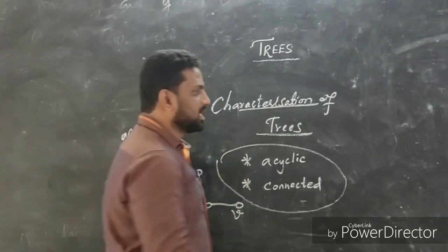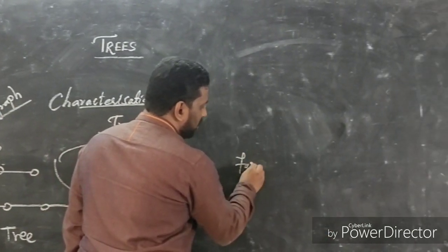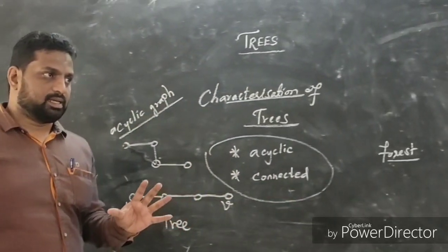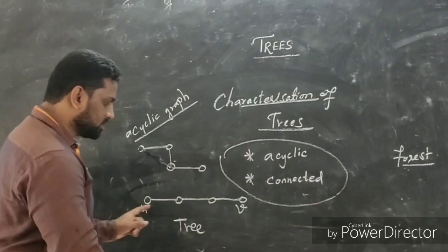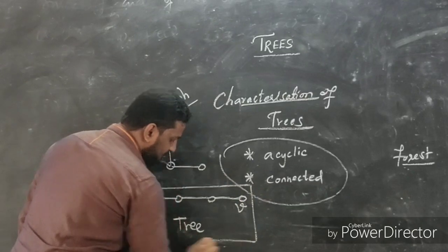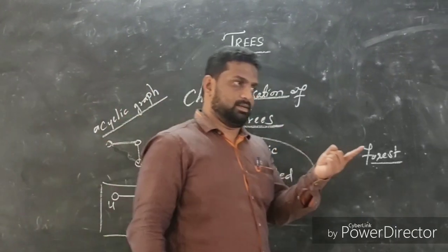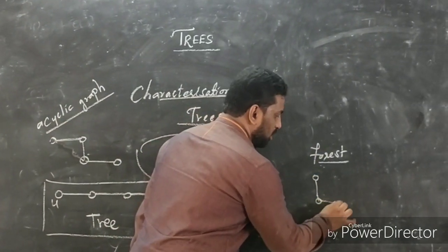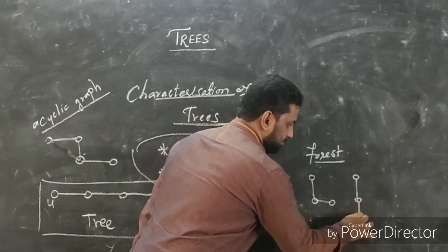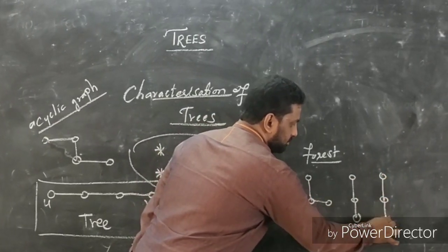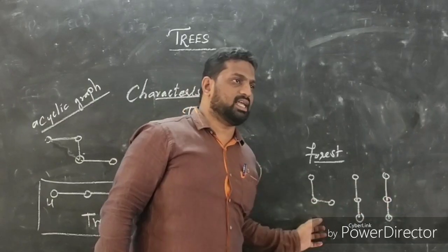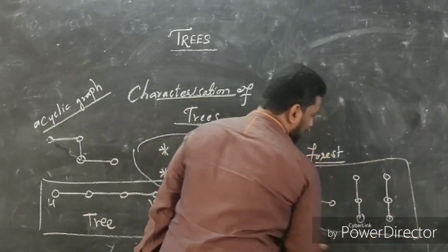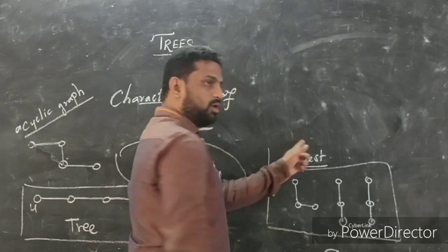Now we will go for the declaration of forest. Forest: if we have more than one tree in a graph, then this graph is called a forest.